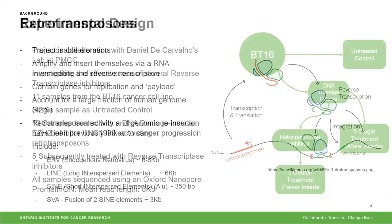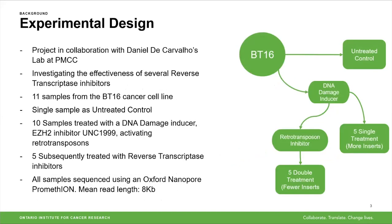The project I'm going to talk to you about today is a collaboration with Daniel D. Carvalho's lab at the Princess Margaret Cancer Center. They're investigating the effectiveness of several reverse transcriptase inhibitors. They took 11 samples from the BT16 cancer cell line, kept a single sample as an untreated control, and took the remaining 10 and treated them with a DNA damage inducer, EZH2 inhibitor UNC199, meant to activate retrotransposon activity. They then kept five samples aside and took the other five and subsequently treated those with different reverse transcriptase inhibitors.